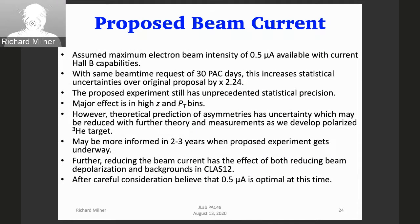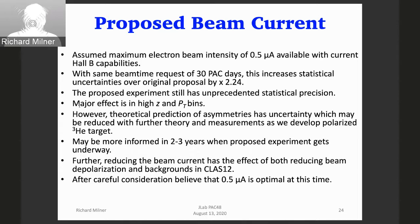Addressing the beam current: we had originally proposed 2.5 microamps, but as pointed out in the technical review, reaching that would require considerable development. So we considered 0.5 microamps. At 0.5 microamps, this increases the statistical uncertainties over the original proposal by the square root of five. However, at 0.5 microamps what we propose still has unprecedented statistical precision. The major effect is at the highest PT and Z bins. We felt that 0.5 microamps with 30 PAC days was optimal at this time, and if we get a scientific go-ahead we'll need two to three years to build the target.